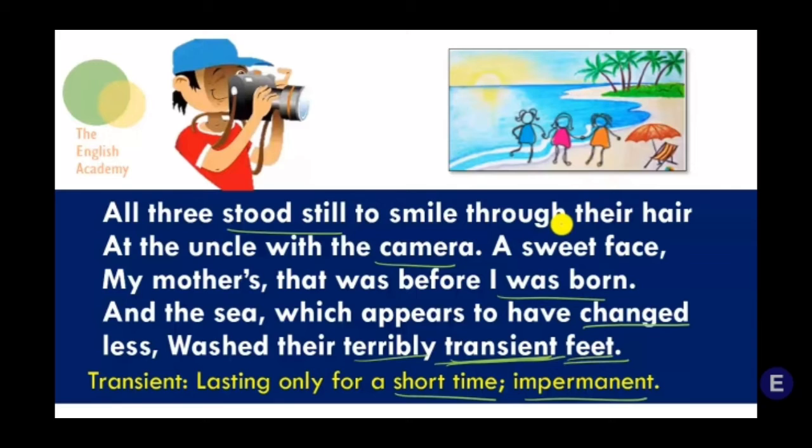'Stood still' indicates that they are not moving — they are just standing there. 'Smile through' indicates their smiling faces, which could be seen through their hair flying over their faces. Their happiness was still visible. 'Terribly' here means extremely. And 'transient' means temporary — that which is going to last only for a short period of time.